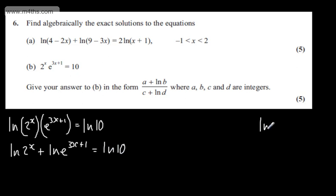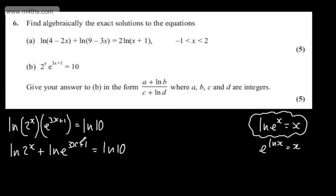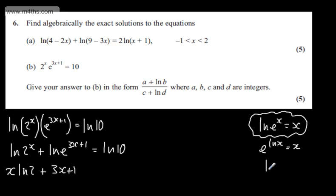Now, ln(e to the x) equals x. Using the power law on the first term brings the x down: x times ln 2. For the second term, since ln(e) equals 1, ln(e to the (3x plus 1)) simplifies to just 3x plus 1. So we have x·ln(2) plus 3x plus 1 equals ln(10).